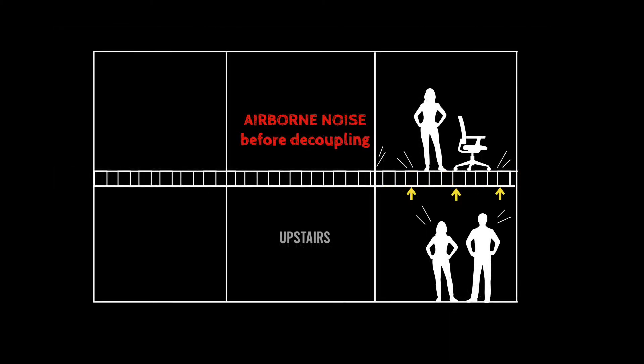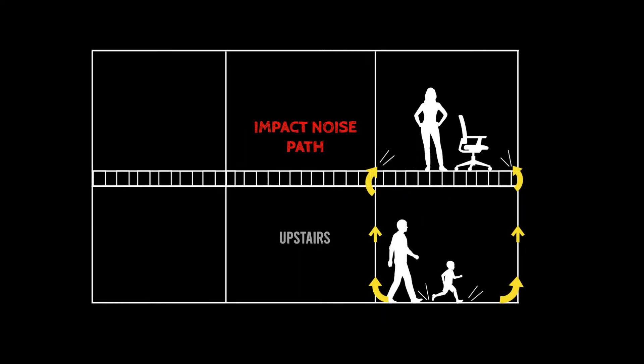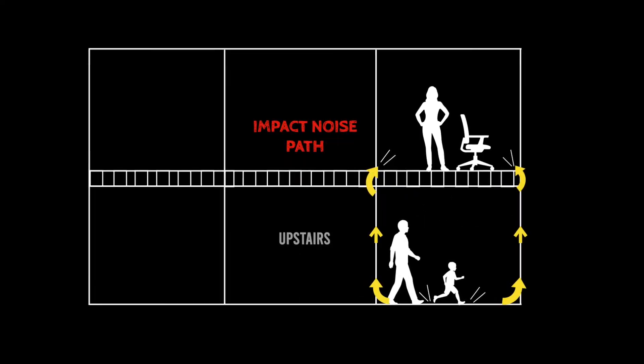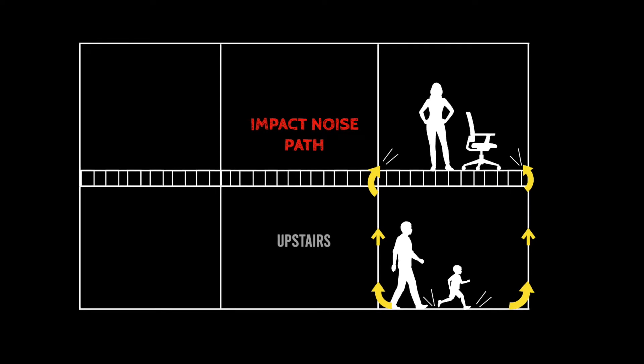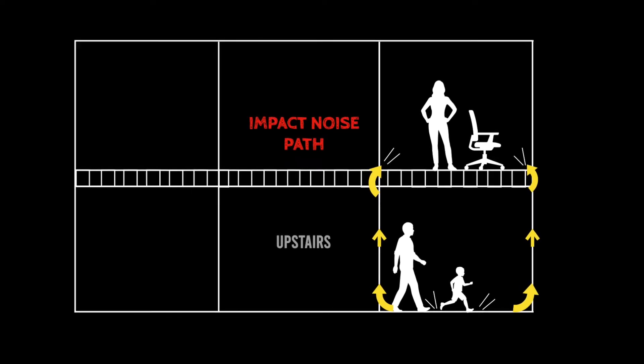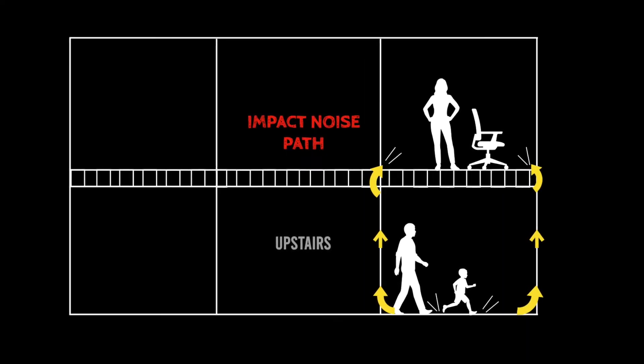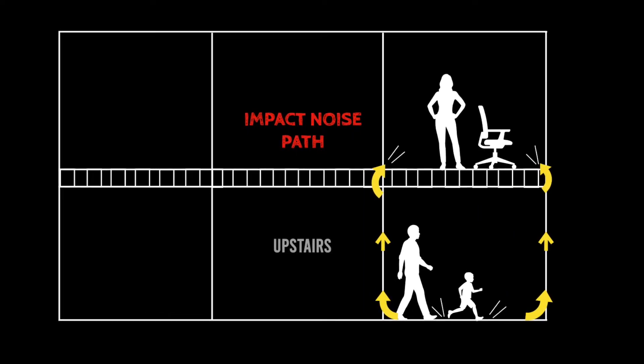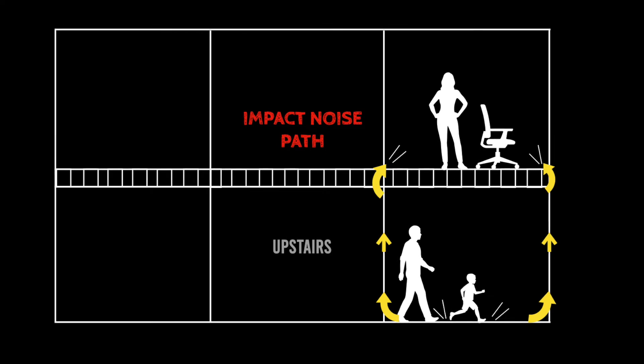Now let's take a look at the noise from downstairs to upstairs. The conversation noise comes up through the downstairs ceiling and maybe even the walls into the upstairs apartment. And when people walk in the downstairs apartment, their impact noise goes into their floor joists, up the wall studs, and into the floor joists of the upstairs apartment.